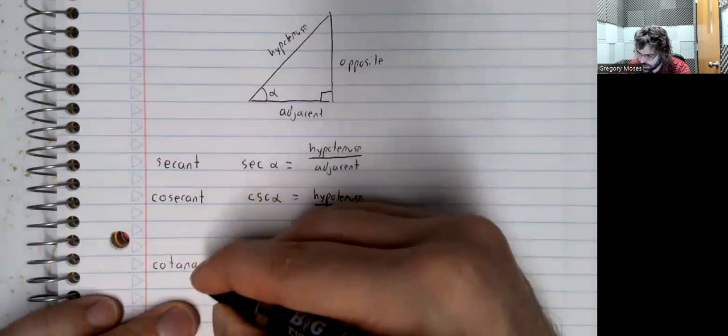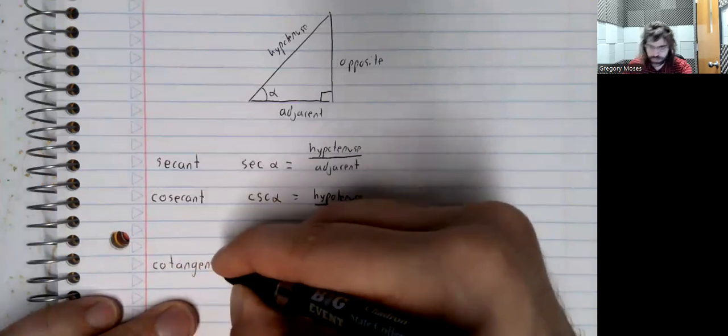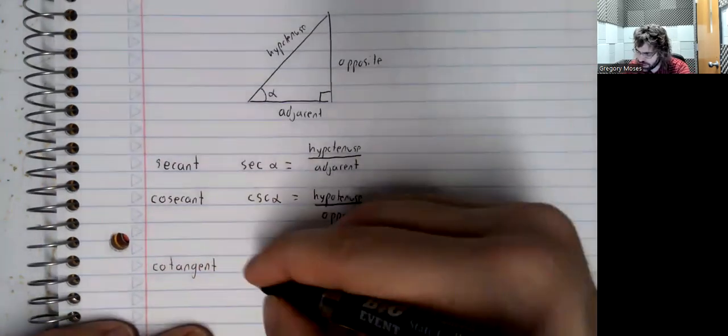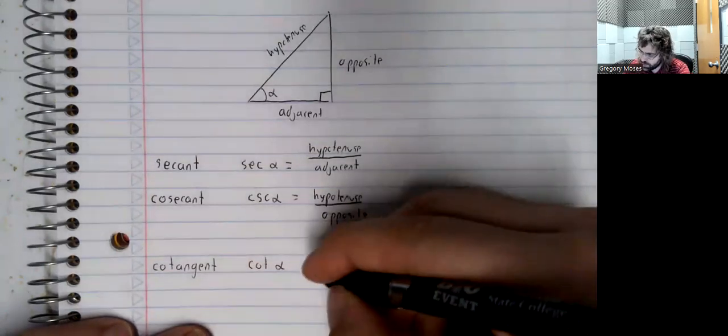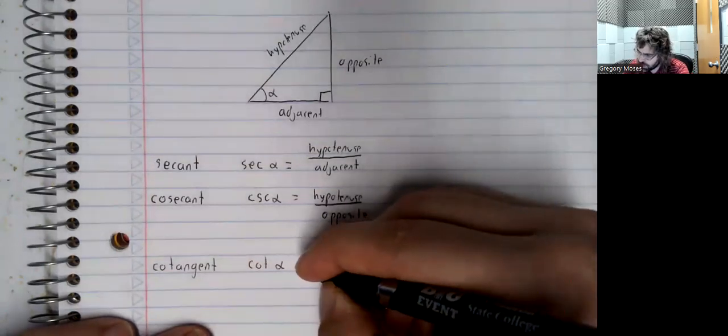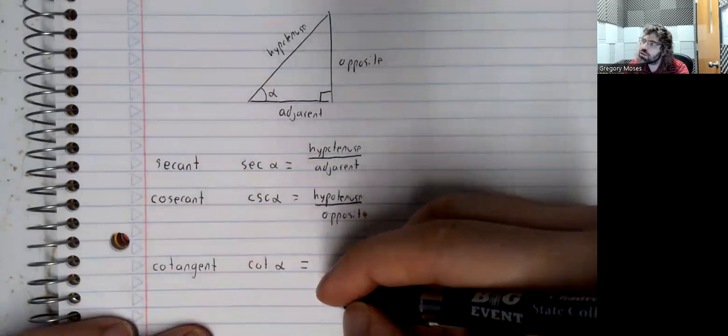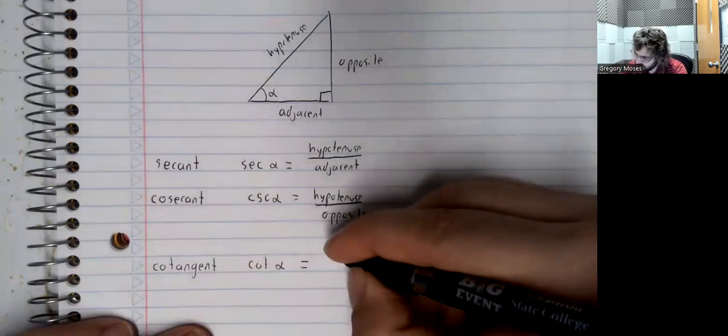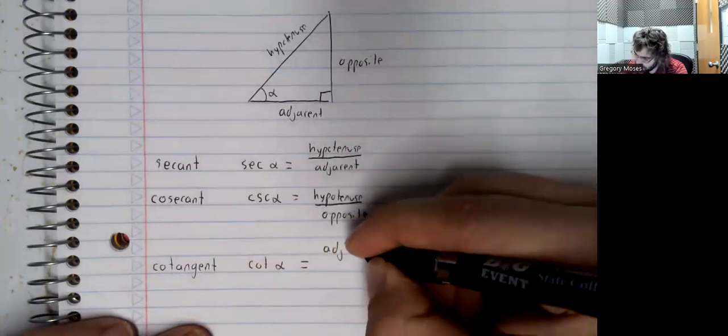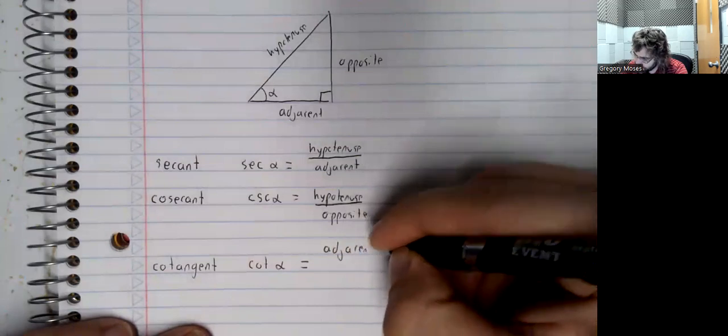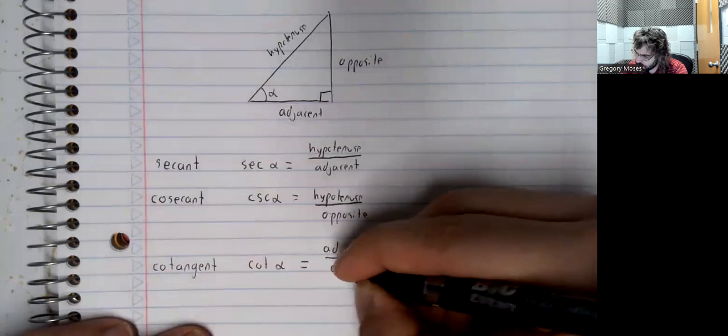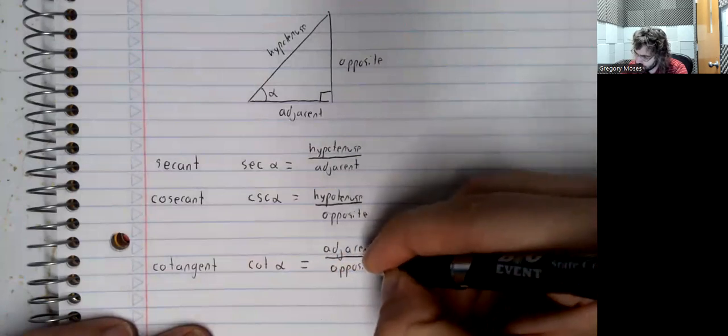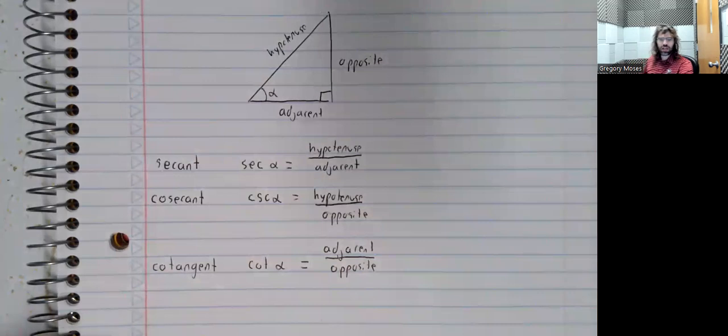And lastly, we have the cotangent. The cotangent is the adjacent over the opposite.